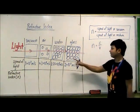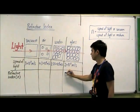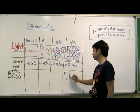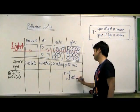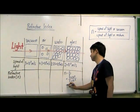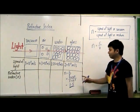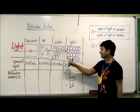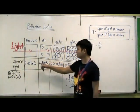Let's use this formula to calculate the refractive index for each individual medium. For glass, the refractive index equals C over V, which is 3 times 10 to the power of 8 divided by 2 times 10 to the power of 8. In this case, I get a refractive index of about 1.5. So what does it mean when glass has a refractive index of 1.5? Basically, it means the speed of light in glass is 1.5 times slower than the speed of light in vacuum.